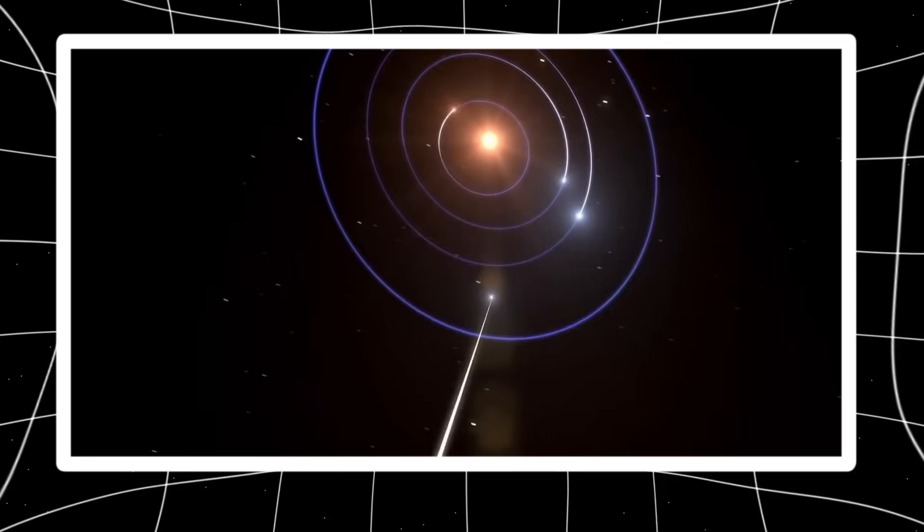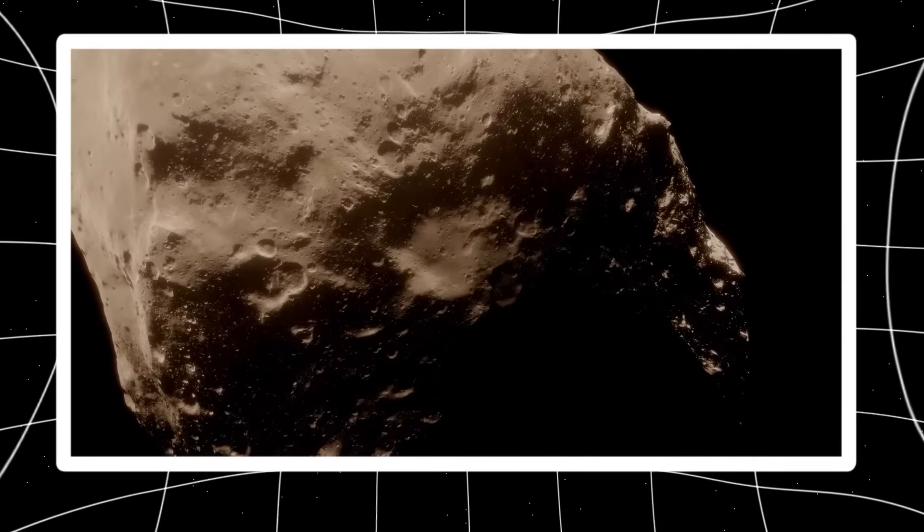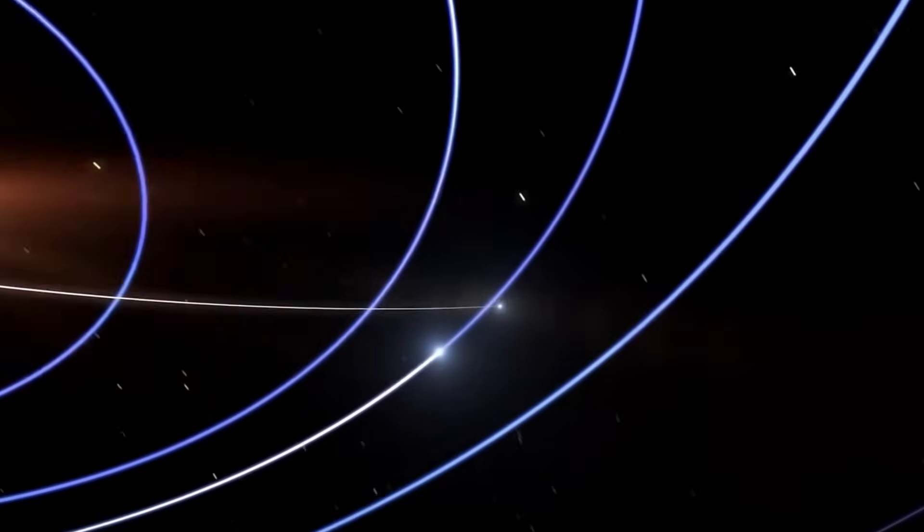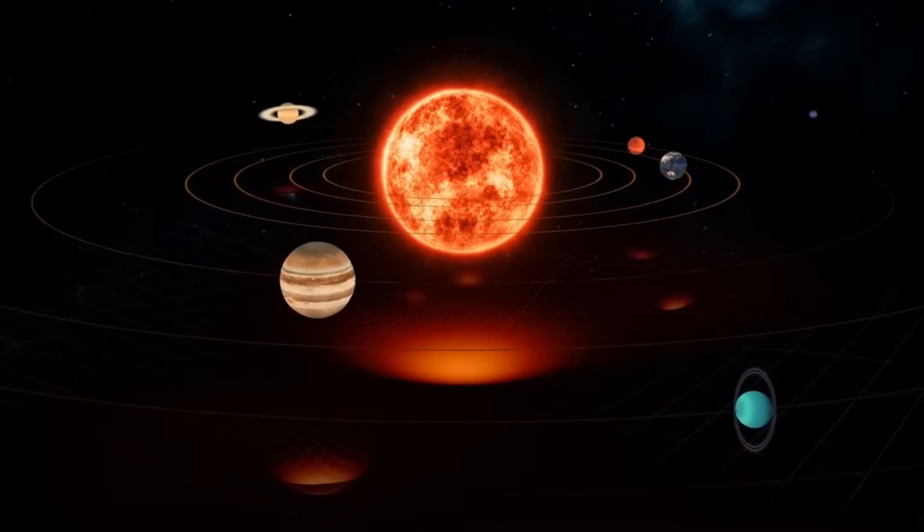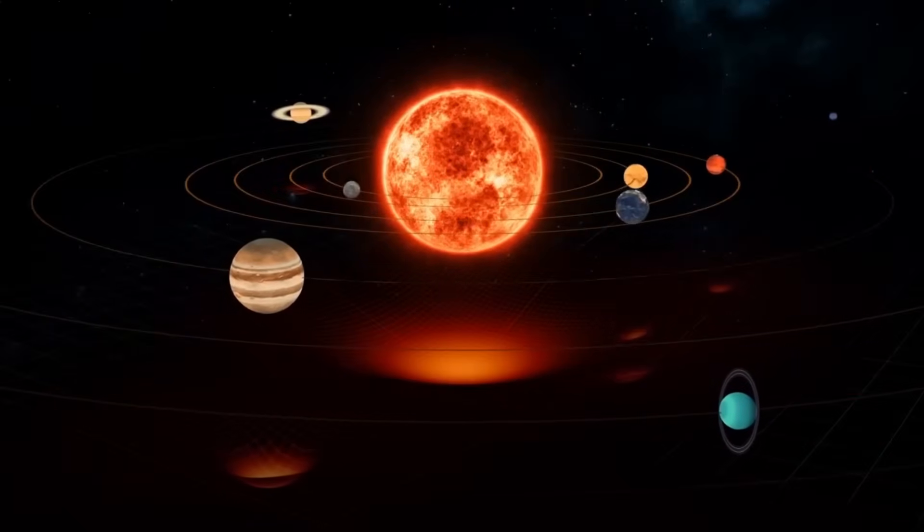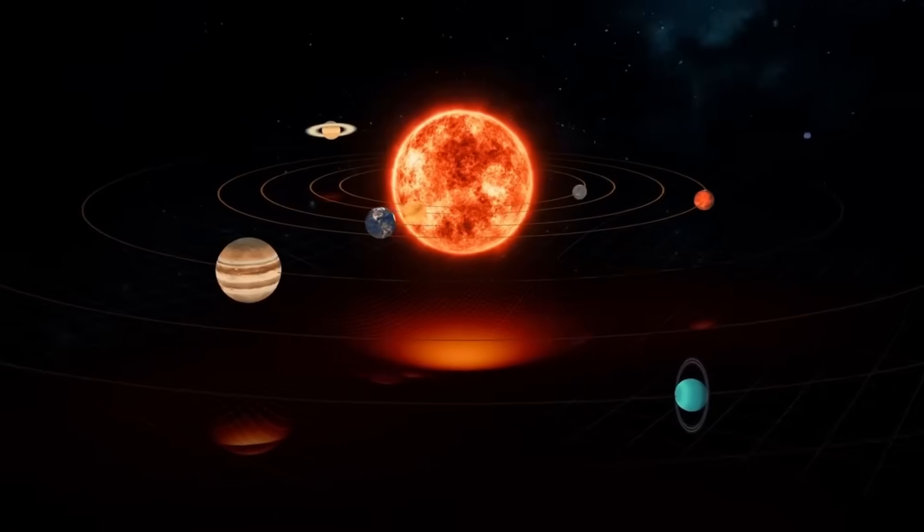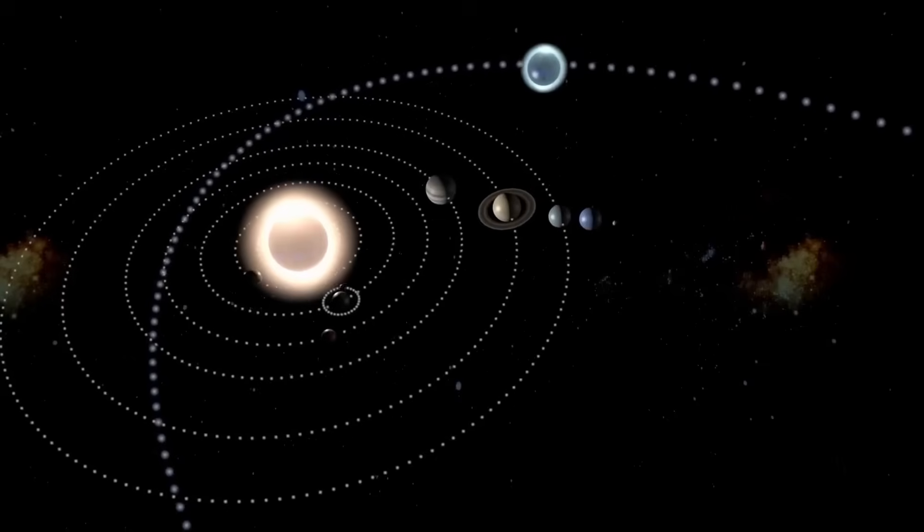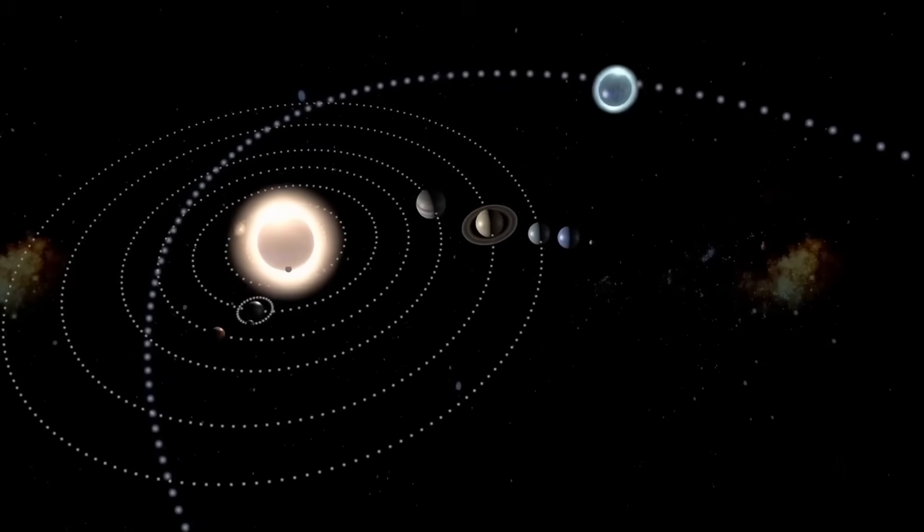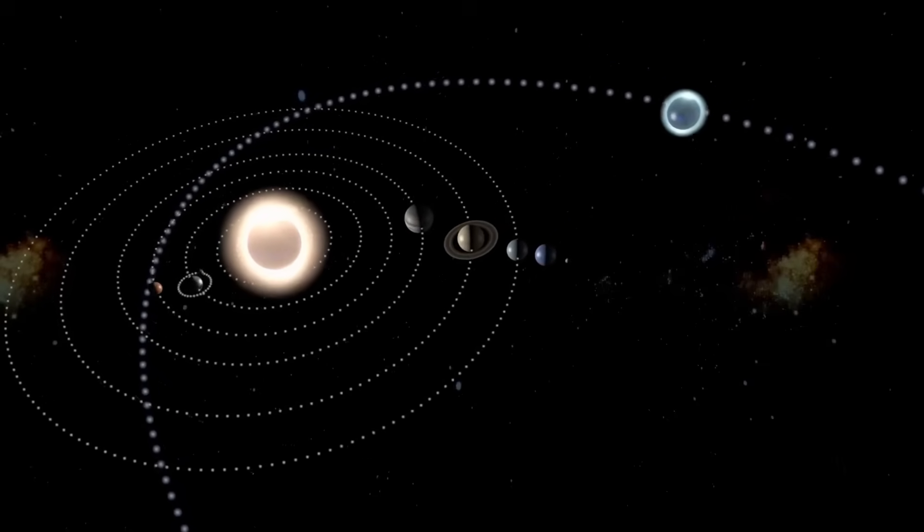But now, against all laws of physics as we know them, it has returned on a path that defies every gravitational model. And what's even more disturbing? The instruments tracking its return have confirmed that it's not alone. Dozens of similar objects have emerged alongside it, forming a constellation of anomalies. They don't drift like rocks. They hover. They oscillate. They adjust. And most chilling of all, they do so in perfect coordination.